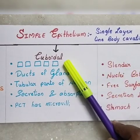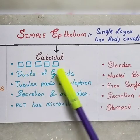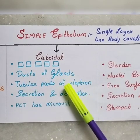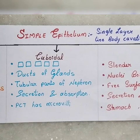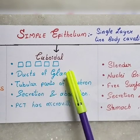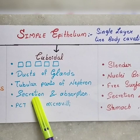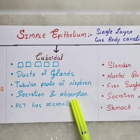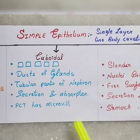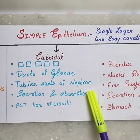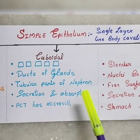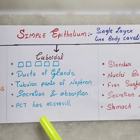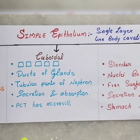Next is cuboidal cells. Cuboidal cells are cube-shaped and are found in the ducts of glands, such as exocrine glands. Cuboidal epithelium is also present in the tubular part of the nephron. The main function is secretion and absorption, including GFR and reabsorption. This is the PCT of the nephron.